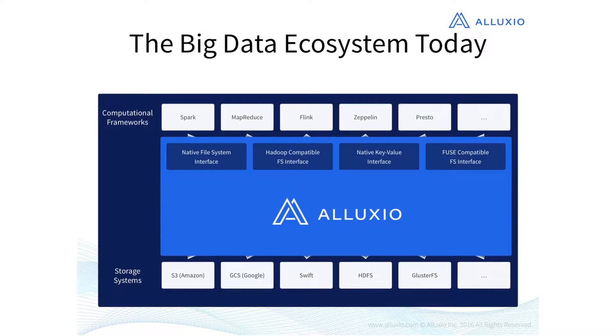Looking at the big data ecosystem today from a high level, it's basically two layers. One layer is about computation frameworks. At this layer, you see many frameworks — a very popular one like Spark, MapReduce, and many others like Flink, Presto, and more are coming — created to provide very high performance for certain workloads.